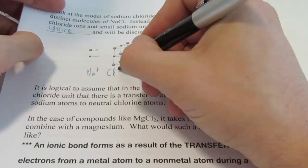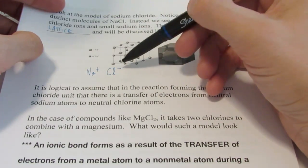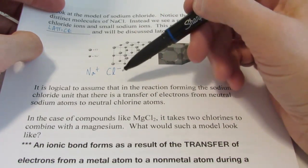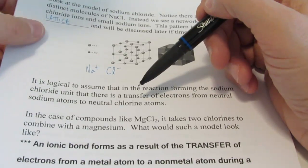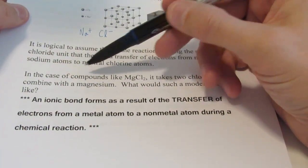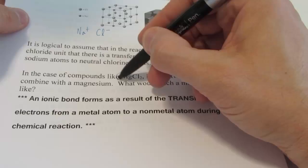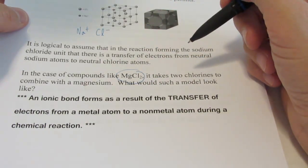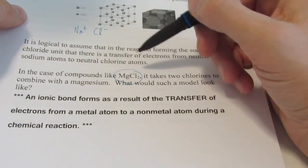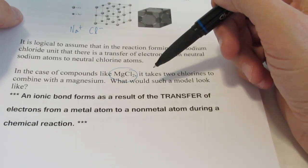In order for it to have a noble gas configuration, it could gain an electron. And when it does that, it forms a negative ion. So the positive, negative attraction. And that is the basis behind the ionic bond.